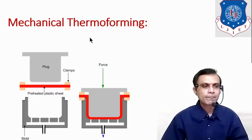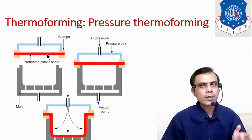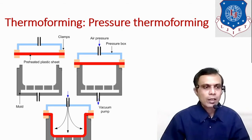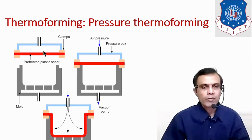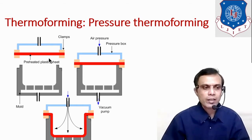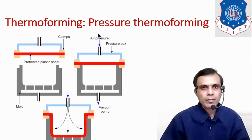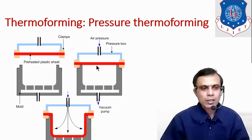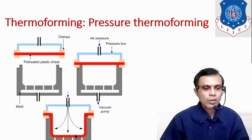The next type in thermoforming is Pressure Thermoforming. As the name suggests, air pressure is used to perform the process. A preheated plastic sheet, already softened, is placed on the mould box. Air is supplied from a connection into the pressure box, which distributes air evenly on the preheated plastic sheet. High-pressure air produces a pressure force on the soft plastic sheet, causing it to take the desired shape as seen in the diagram.